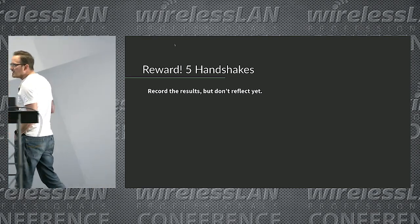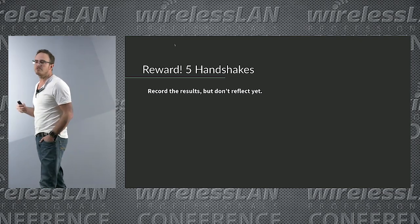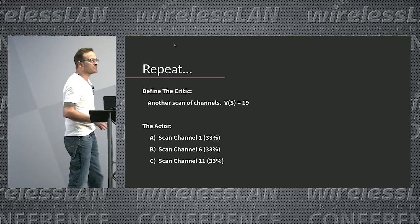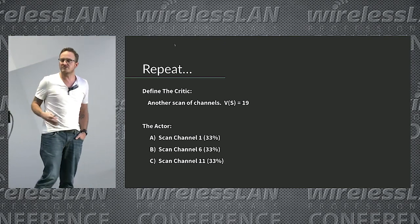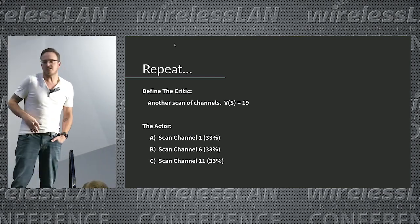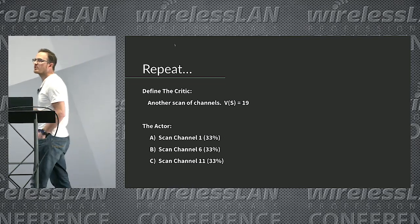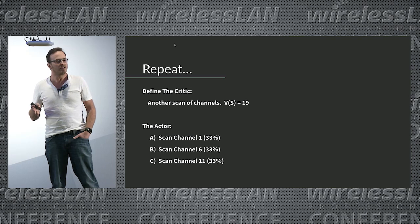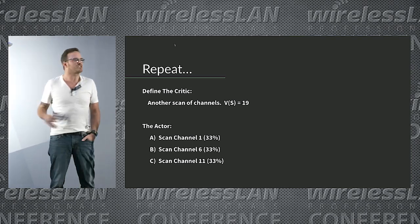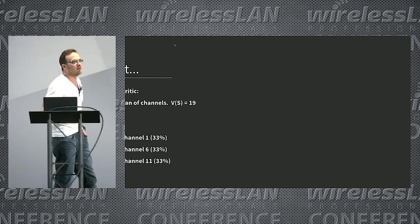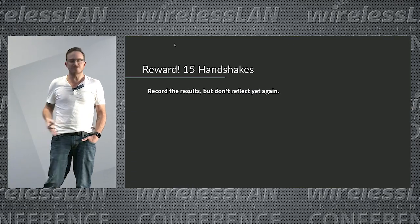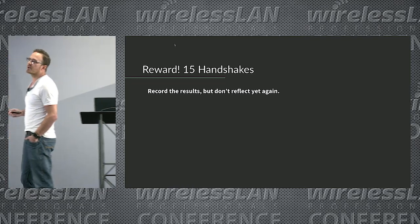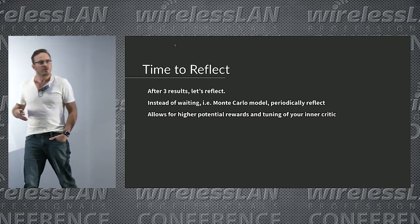Say I captured five handshakes — I record the results but don't reflect on them yet. I repeat the process: define the critic again, scan the channels again, and reach another decision point. Channels 1, 6, and 11 all look equally likely, so I have about a 33% chance of reward from each. I make a blind guess and choose channel 11 — exploring new territory. This time I get 15 handshakes, which is a pretty good reward. Still, we look at the results but don't reflect until we have at least three results.